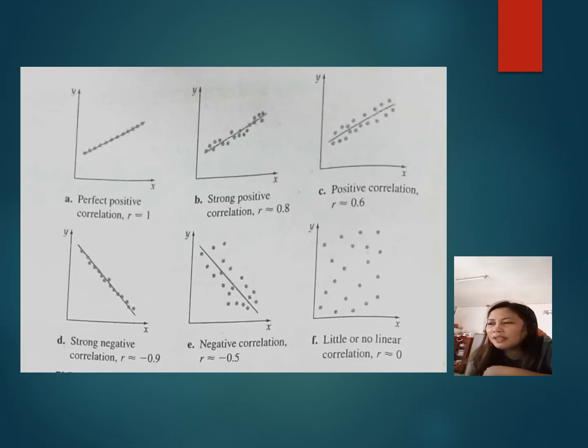If the linear correlation coefficient R is positive, the relationship between the variables has a positive correlation. In this case, if one variable increases, the other variable also tends to increase. If R is negative, the linear relationship between the variables has a negative correlation.